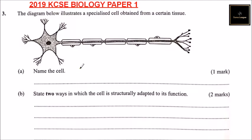Question number three. The diagram below illustrates a specialized cell obtained from a certain tissue. Name the cell. This cell is a nerve cell — a nerve cell that is used to transmit messages in our body. We can also call it a motor neuron.